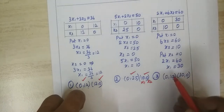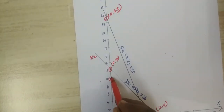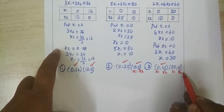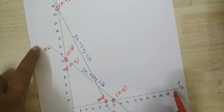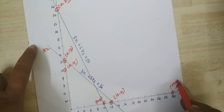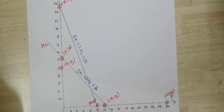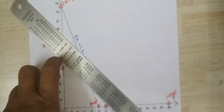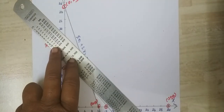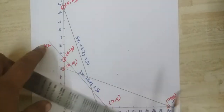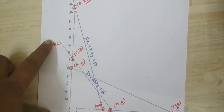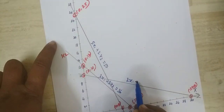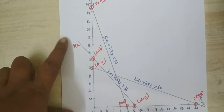Coming to the third equation: the points are (0, 10) and (30, 0). For (0, 10): x1 equal to 0, x2 equal to 10. For (30, 0): x1 equal to 30, x2 equal to 0. We mark these points. At the point of intersection, x2 is equal to 15.